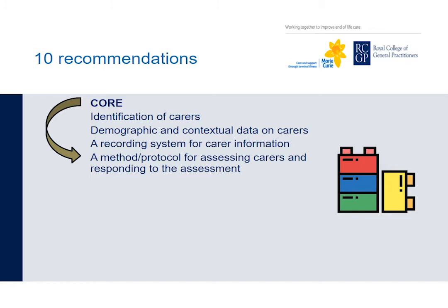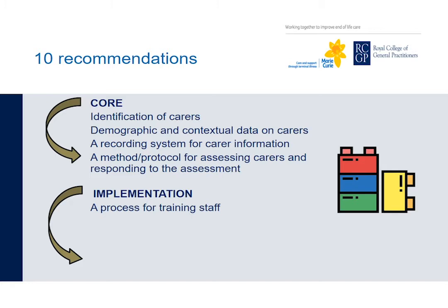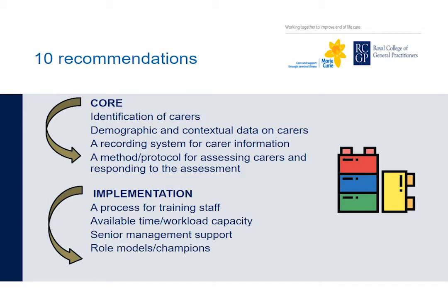This is about moving away from inferring that carers are not coping, to assessing why they are not coping and what would help from their perspective. The other six recommendations are to implement and sustain carer assessment and support in practice. This includes a process for training practitioners to ensure everyone involved is aware of protocols and importantly confident about using them. Available time and workload capacity required to plan, implement and sustain carer assessment and support. Senior management support is key to provide leadership and authority to make required changes. And role models — champions for carers — as facilitators within teams to embed carer identification, assessment and support.